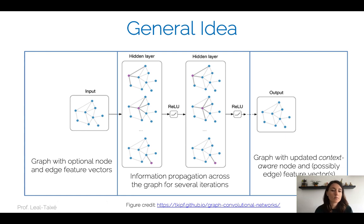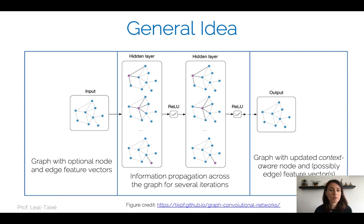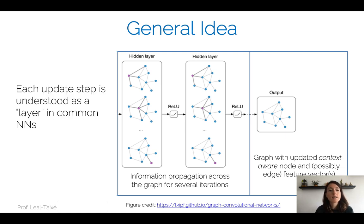The general idea of graph neural networks is that we're going to represent our concepts with a graph, and we'll start by building this graph with, most likely, a series of node and edge feature vectors. These are essentially embeddings containing certain information you're interested in processing. In the second step, we're going to perform a series of information propagation steps, separated into several iterations. Each update step or information propagation iteration can be considered as a layer in common neural networks.